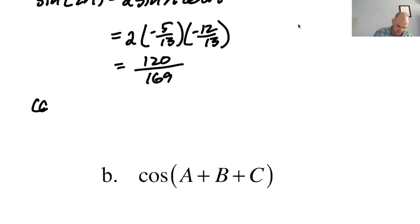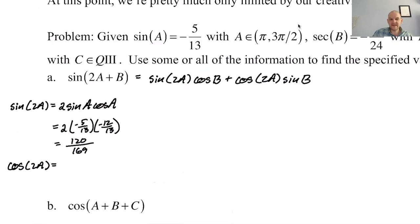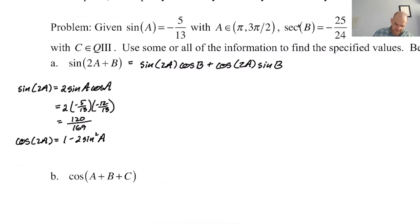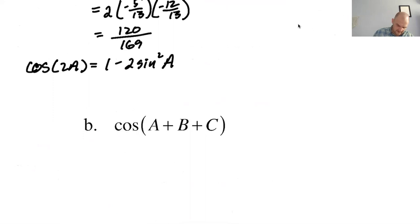And then I need the cosine of 2a. So the cosine of 2a, since I was given the sine of a, I'm going to use 1 minus 2 sine squared so that I have fewer opportunities to introduce my own mistakes. So that's going to be 1 minus 2 times negative 5 over 13 squared, which is 169 minus 50 is 119 over 169.